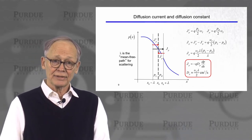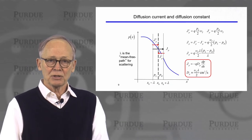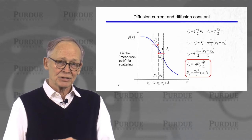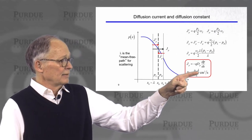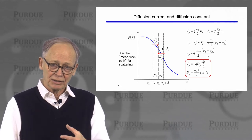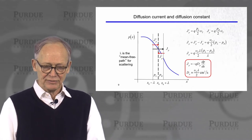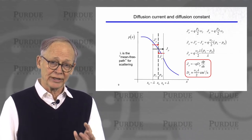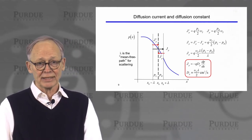The diffusion coefficient depends on the thermal velocity — remember this is all driven by random thermal motion. The higher the temperature, the higher the random thermal velocity and the higher the diffusion coefficient. More scattering means a shorter mean free path, making it harder for particles to diffuse, so the diffusion coefficient is proportional to the mean free path. The resulting simple expression is: diffusion coefficient equals thermal velocity times mean free path divided by two — analogous to the simple expression for mobility, q-tau over m.